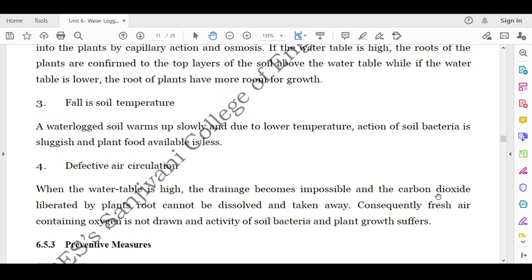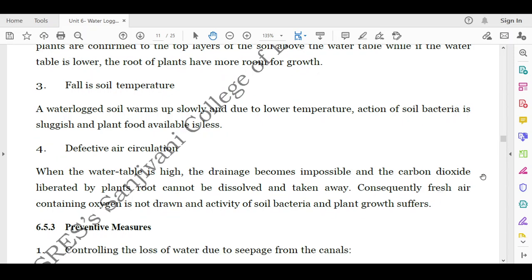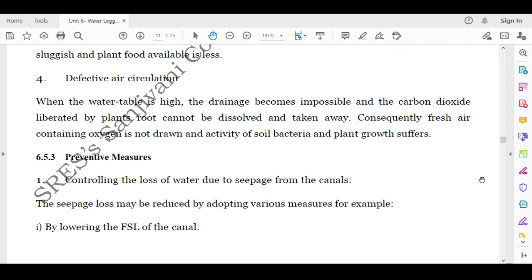A decrease in temperature will affect the activity of bacteria and ultimately it will affect the yield of the crop. Then defective air circulation. When the water table is high, the drainage becomes impossible and the carbon dioxide liberated by the plant root cannot be dissolved and taken away. Consequently, fresh air containing oxygen is not drawn and the activity of soil bacteria and plant growth suffers.